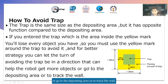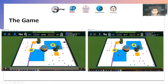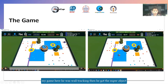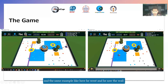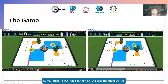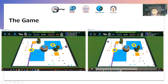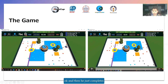For better strategy, you can let the turn of avoiding the trap be in a direction that can help the robot get more objects, go to the depositing area, or track the wall. You can actually let the turn in a place that helps to deposit or for wall tracking. In my game, here, he was wall tracking, then he got a super object. And the same example, like here — he went and then just stole the wall. Small turn into where he is, touching the red, then he will take the super object. And then he just completes.